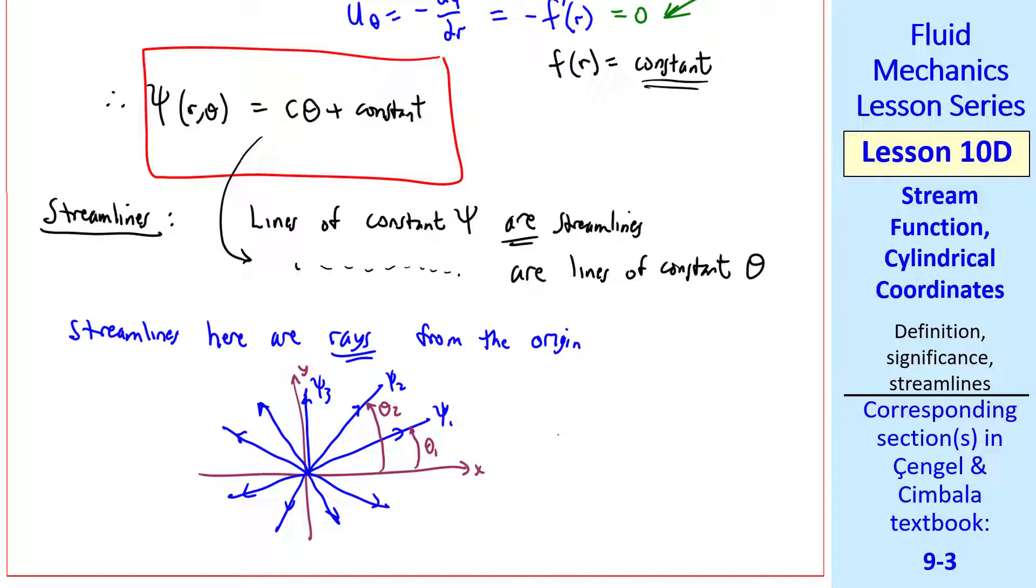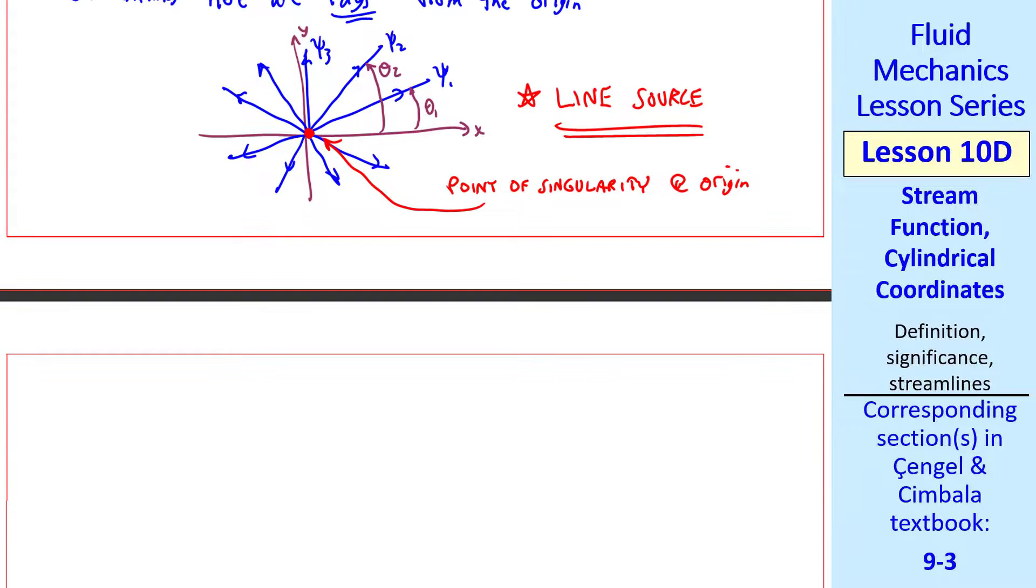By the way, in fluid mechanics, we call this a line source. It's a line into the page here, since this is planar flow that's independent of z direction. And it's a source. All the flow emanates from the origin, which is a singular point or a point of singularity at the origin.